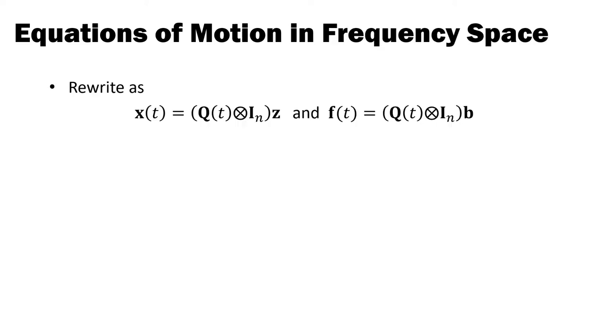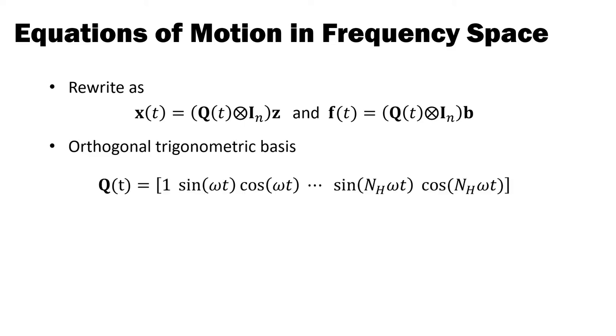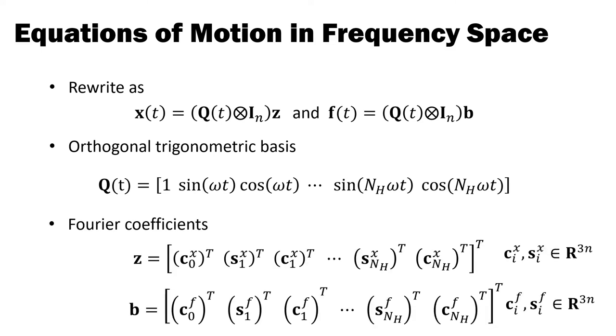We can rewrite these truncated Fourier series in a more compact form by introducing the orthogonal trigonometric basis matrix Q and by stacking up all Fourier coefficients into two vectors, z for positions and b for forces. It's worth noting that the length of these vectors is 2NH plus 1 times the number of degrees of freedom of the mechanical system. We use between 3 and 7 harmonics, which leads to roughly 2 to 5 times as many variables as there are degrees of freedom in the mechanical system.